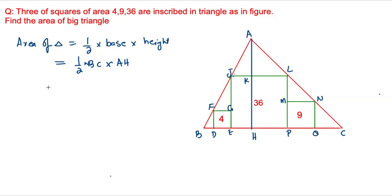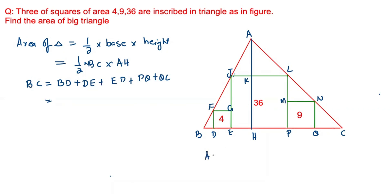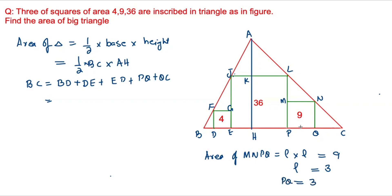The length BC will be equal to BD plus DE plus EP plus PQ plus QC. The square MNPQ has area equal to length times length, which equals 9. Taking the square root on both sides, the length equals 3. Therefore PQ equals 3.